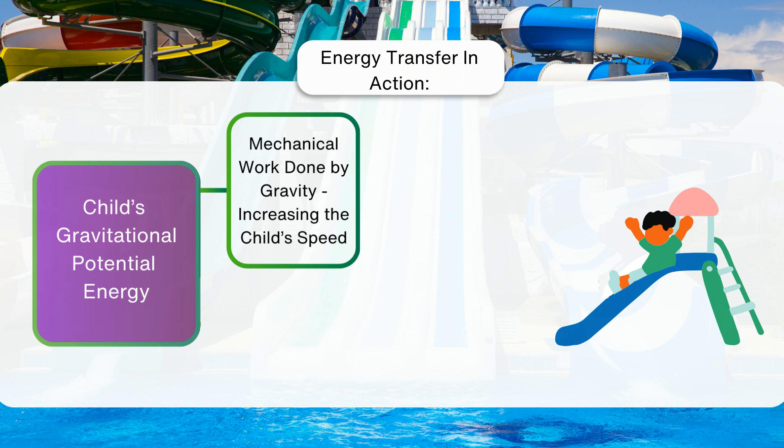This mechanical work due to gravity causes the child to speed up, converting their gravitational potential energy into kinetic energy. However, as the child slides down, not all the gravitational potential energy converts into kinetic energy. Some of it is used to overcome friction between the child and the slide.